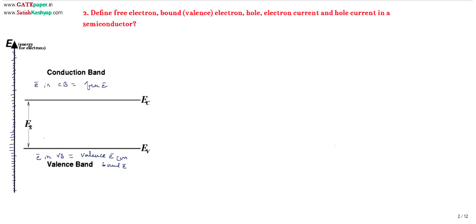Electrons in the valence band are nothing but electrons present in the outermost orbit of atoms. Since the outermost electrons are still being controlled by the parent atom, they are called as bound electrons or valence electrons.